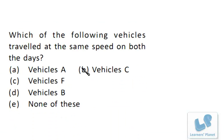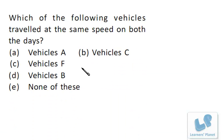The first question is which of the following vehicles travel at the same speed on both the days. Now what is speed? That is distance by time. We have four options: A, B, C, F, and if none of them is correct then we have option E, none of these. So we need to check the speed of A, B, C and F.